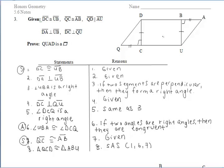So in step 6, I mentioned that the two right angles are congruent because if two angles are right angles, then they are congruent. We can then prove the triangles congruent by side-angle-side.